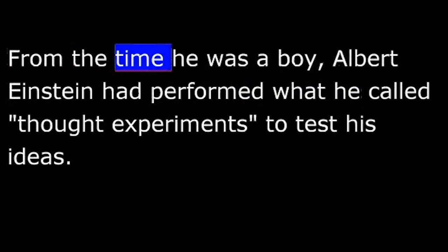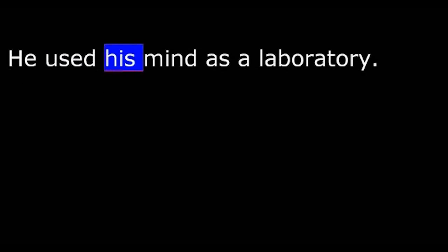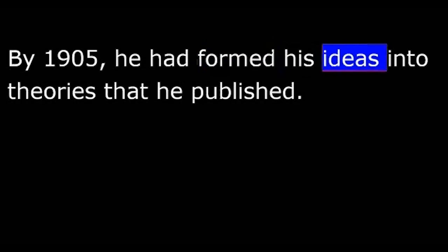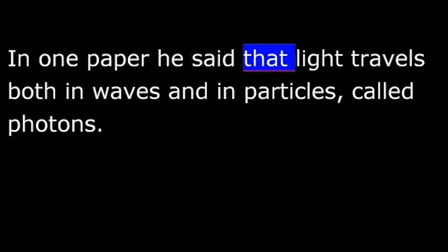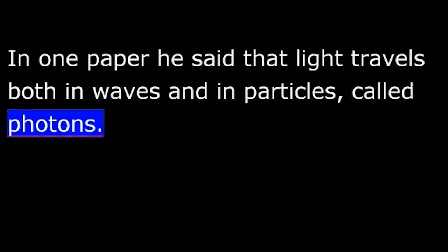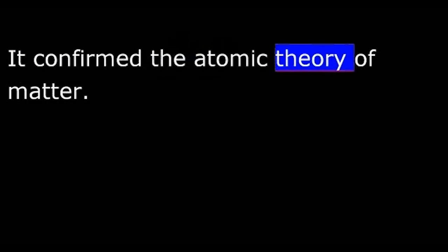From the time he was a boy, Albert Einstein had performed what he called thought experiments to test his ideas. He used his mind as a laboratory. By 1905, he had formed his ideas into theories that he published. In one paper, he said that light travels both in waves and in particles called photons. This idea is an important part of what is called the quantum theory. Another paper was about the motion of small particles suspended in a liquid or gas. It confirmed the atomic theory of matter.